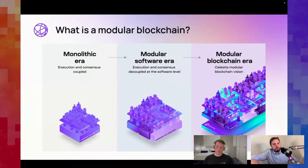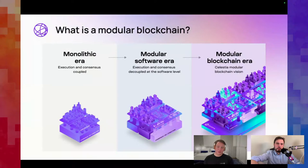We've seen blockchain technology progress from a monolithic era where execution and consensus are tightly coupled — the blockchain does everything, causing bottlenecks, high transaction fees, and low throughput. In the modular software era we decouple execution and consensus at the software level, but that requires you to create an entire validator network. In the modular blockchain era we split apart all the functions and build on top of a shared security layer so everyone has the same security guarantees.